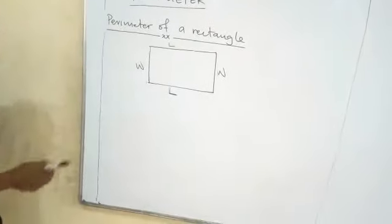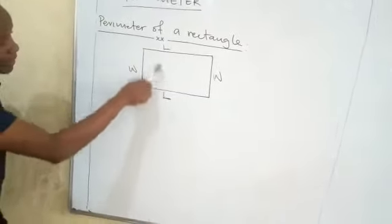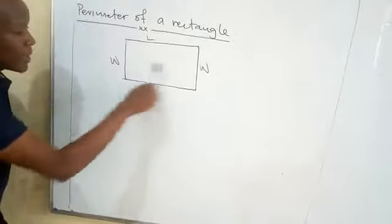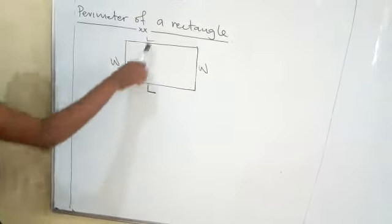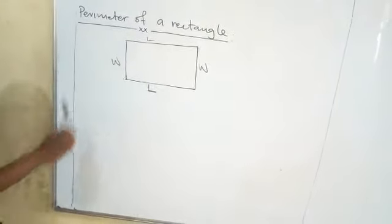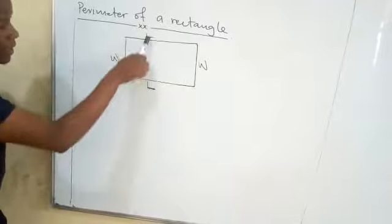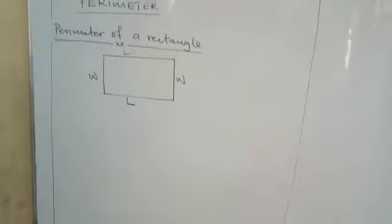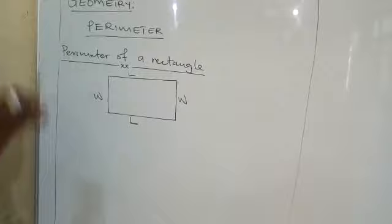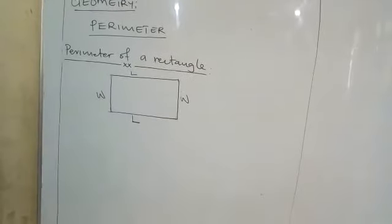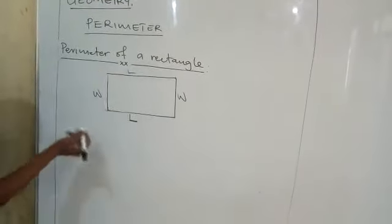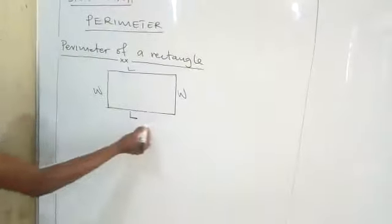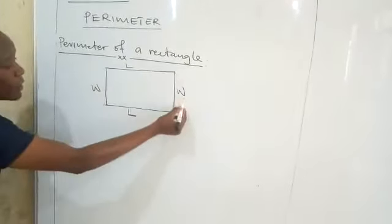You can see we have two lengths. At the same time, we have two widths — these two sides are equal. Width and width; length and length. Now, perimeter — as we learned in the first lesson, perimeter is the distance around the figure. You have to move around the figure.